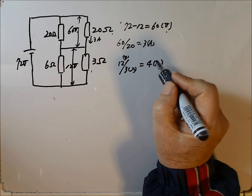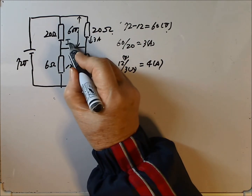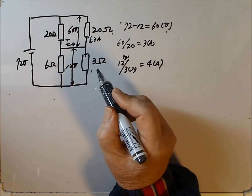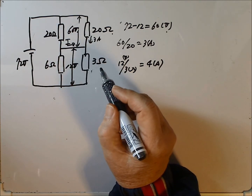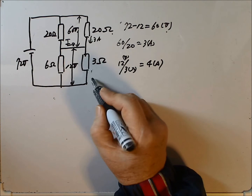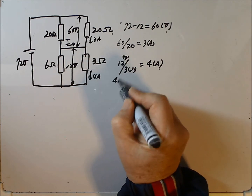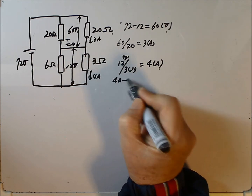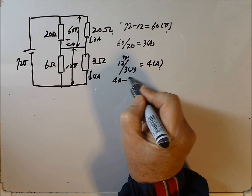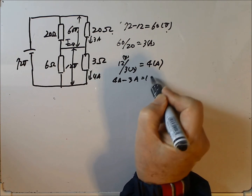Therefore, the current I is 1 ampere, because it is 4 amperes minus 3 amperes equal 1 ampere.